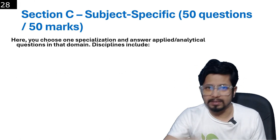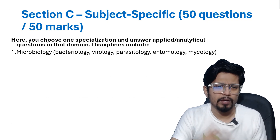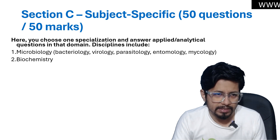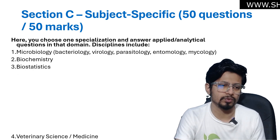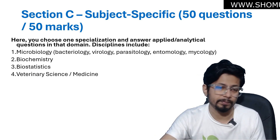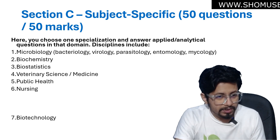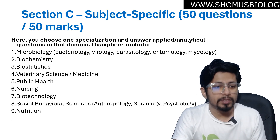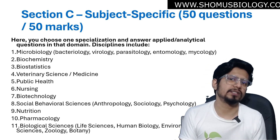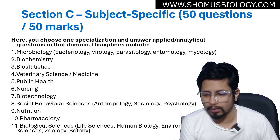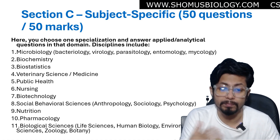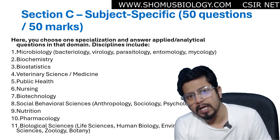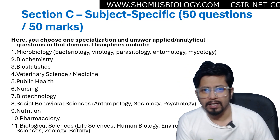The list of disciplines includes microbiology — covering bacteriology, virology, parasitology, entomology, and mycology — biochemistry, biostatistics, veterinary science or medicine for those from a veterinary background, public health, nursing, biotechnology, social and behavioral sciences like anthropology, sociology or psychology, nutrition, pharmacology, and biological sciences. Many students now doing MSc in biological sciences, life science, human biology, environmental science, zoology, or botany choose biological sciences and get questions from their own region of expertise.